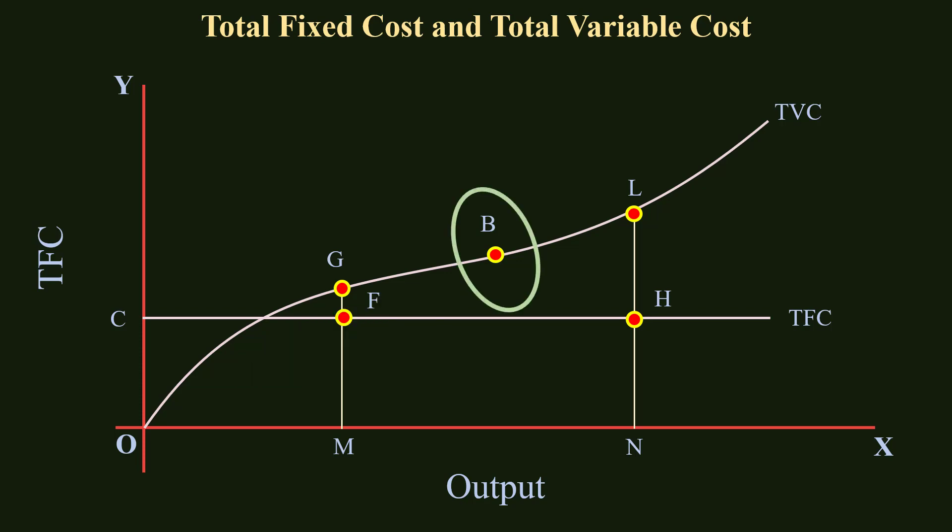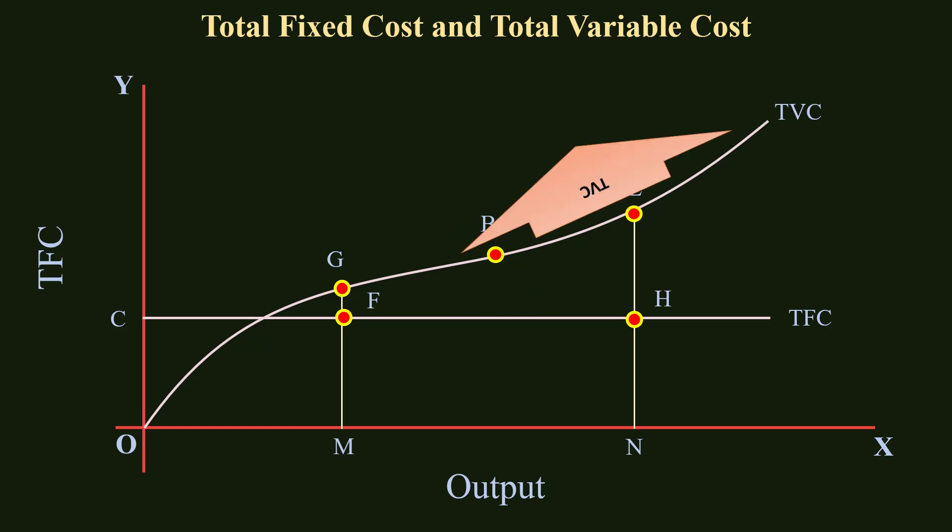There is a point of inflection at B. At B, Total Variable Cost increases at a constant rate, and the Law of Constant Returns operates. To the right of point B, the Total Variable Cost Curve is concave upwards because Total Variable Cost is increasing at an increasing rate and the Law of Decreasing Returns operates.